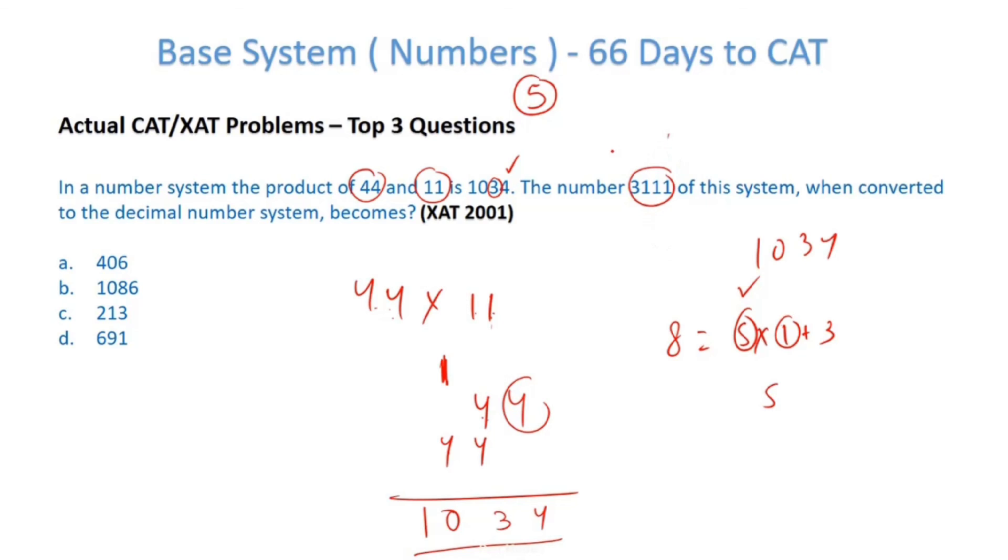Now I have to convert this number in base 5. So 1034: 5³, 5², 5¹, 5⁰. 1×5⁰ = 1, 1×5 = 5, wait, 25, and 3×125 = 375.